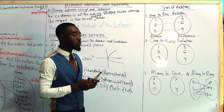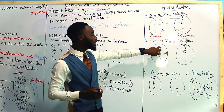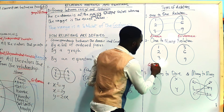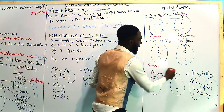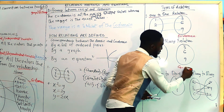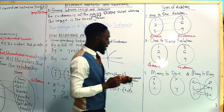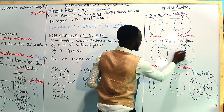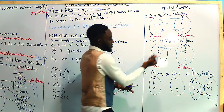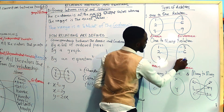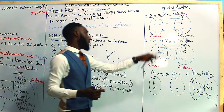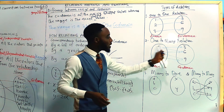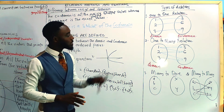The next type is a one-to-many relation. In this case, one value in the domain has the possibility of mapping to more than one value in the co-domain. For example, 1 goes to 3 and this same 1 also goes to 6. Or 2 goes to 6 and this same 2 goes to 9. So in this kind of relation, one domain value maps to many co-domain values — we call it a one-to-many relation.